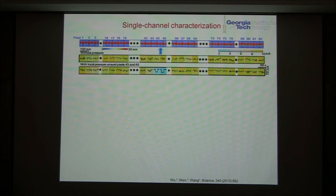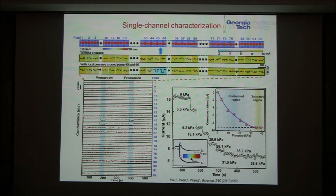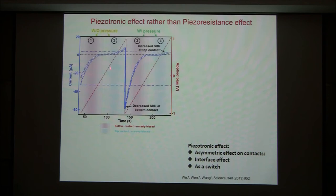I want to show you this is the piezotronic effect. Why? If you measure all 92-by-92 — over 8,000 piezotronic transistors — it gives you a map image. To confirm it is piezotronic and not piezo-resistive effect, let's look at the measurement. This is associated with one pixel, sweeping the bias from reverse bias to positive bias. Let's see the current change before and after we apply the pressure.